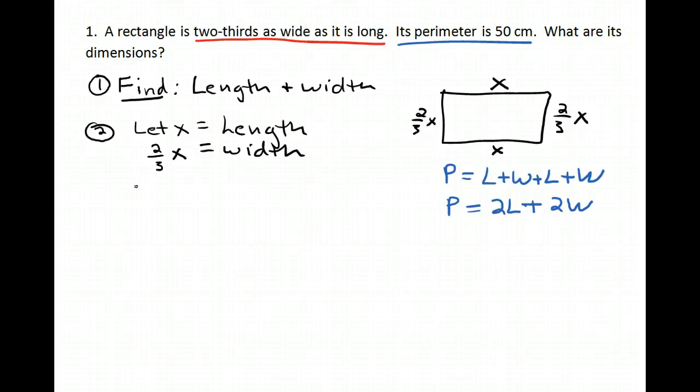So the perimeter for my particular rectangle is going to be two times the length, which is x, plus two times the width, which is two-thirds x. Now, we're told that the perimeter is 50, so I can put in a 50 for perimeter.